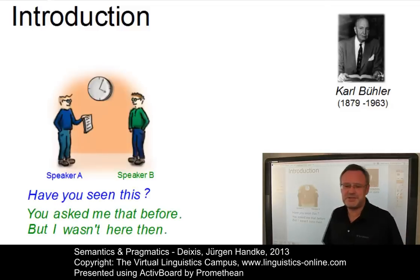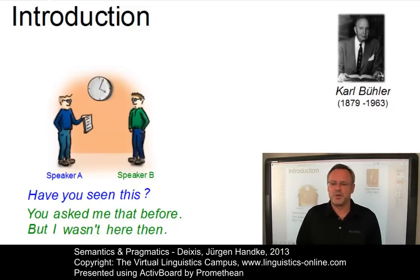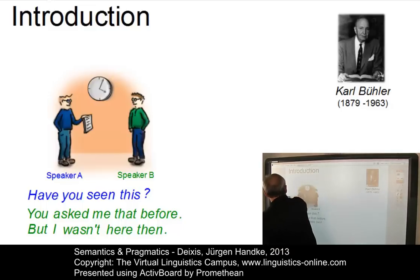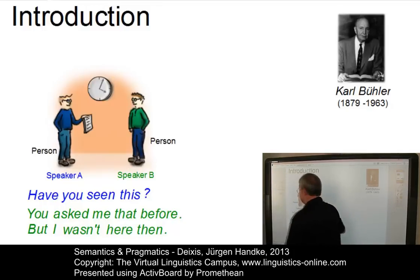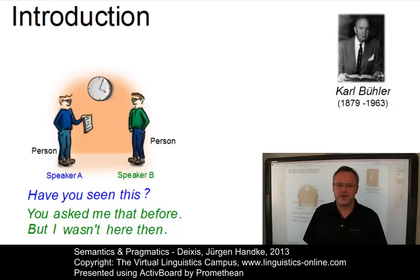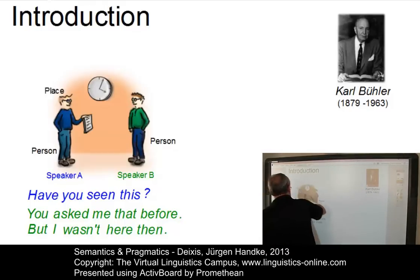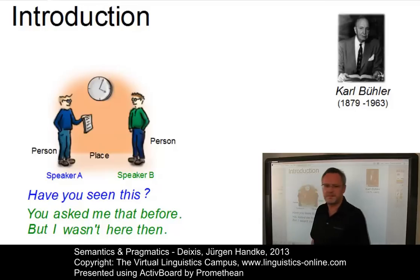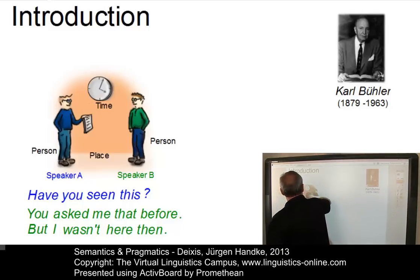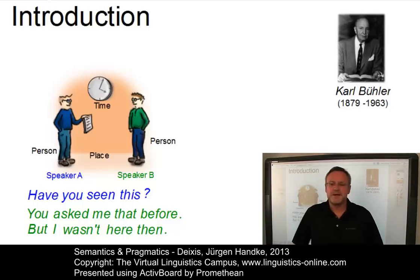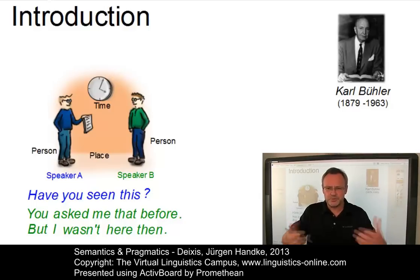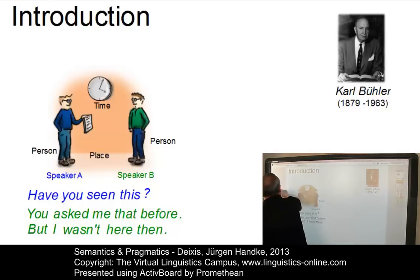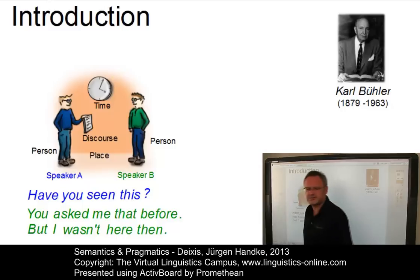Deixis is basically a speaker-centred notion where the central person is the speaker. Here we have two speakers, speaker A and speaker B. The central place is the speaker's location. The central time is the time at which the speaker utters a particular sentence or produces a particular utterance. And the central discourse element is the one containing the speaker's utterance.